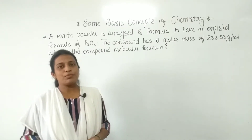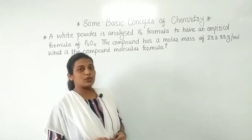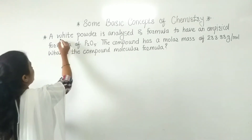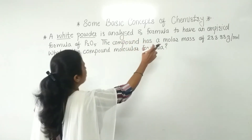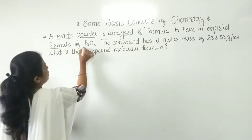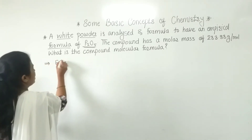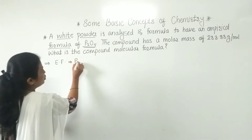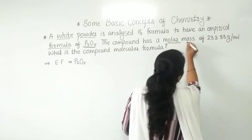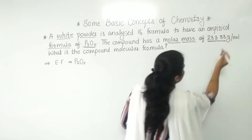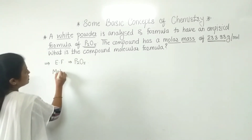Hello, from the empirical formula and molecular formula, today's example: a white powder is analyzed and found to have an empirical formula of P2O5. The compound has a molar mass of 283.88 gram per mole.